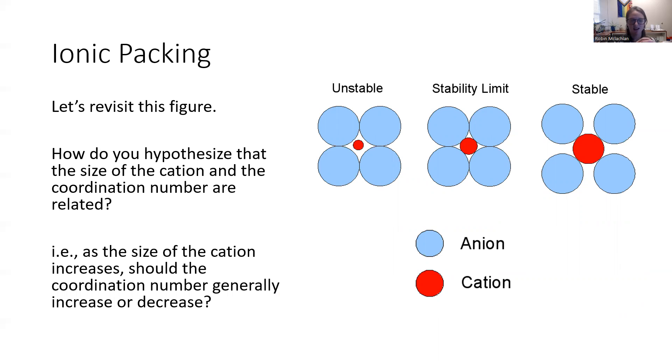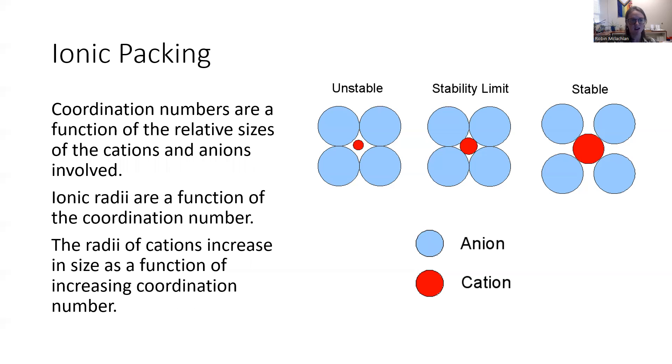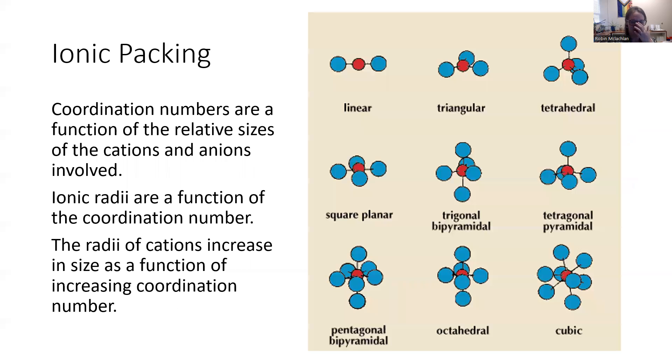Well, it makes sense that if the cation gets bigger and bigger, more and more anions can fit around it closely. There's more space for that to happen. So that means that the radii of cations increase the coordination number. The larger a cation gets, the more anions can bond to it and be stable.